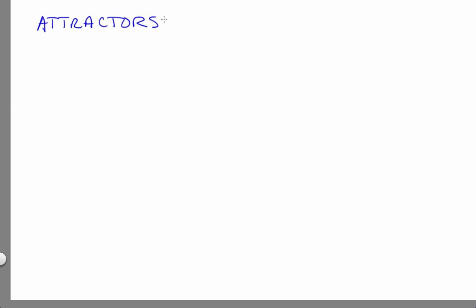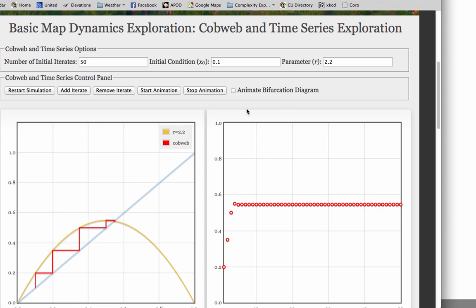Now, back to fixed points. Remember this demonstration using the logistic map application that showed that lots of different initial conditions go to the same fixed point. So, if we use the initial condition 0.1 and the parameter value 2.2, we go to this fixed point. Let's try something different.